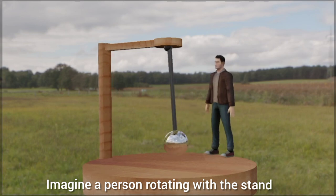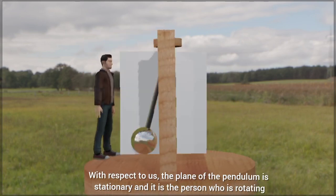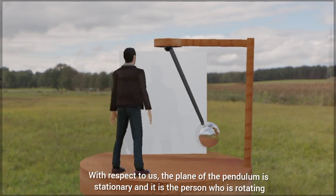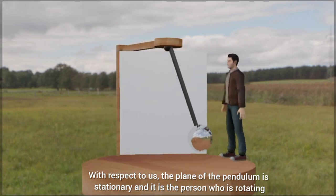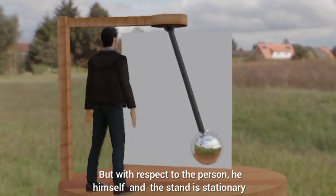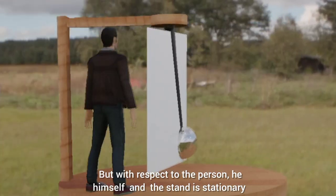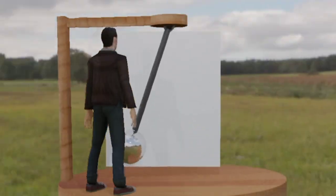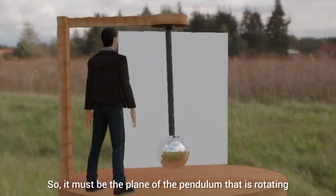Imagine a person rotating with the stand. With respect to us, the plane of the pendulum is stationary and it is the person who is rotating. But with respect to the person, he himself and the stand are stationary, so it must be the plane of the pendulum that is rotating.